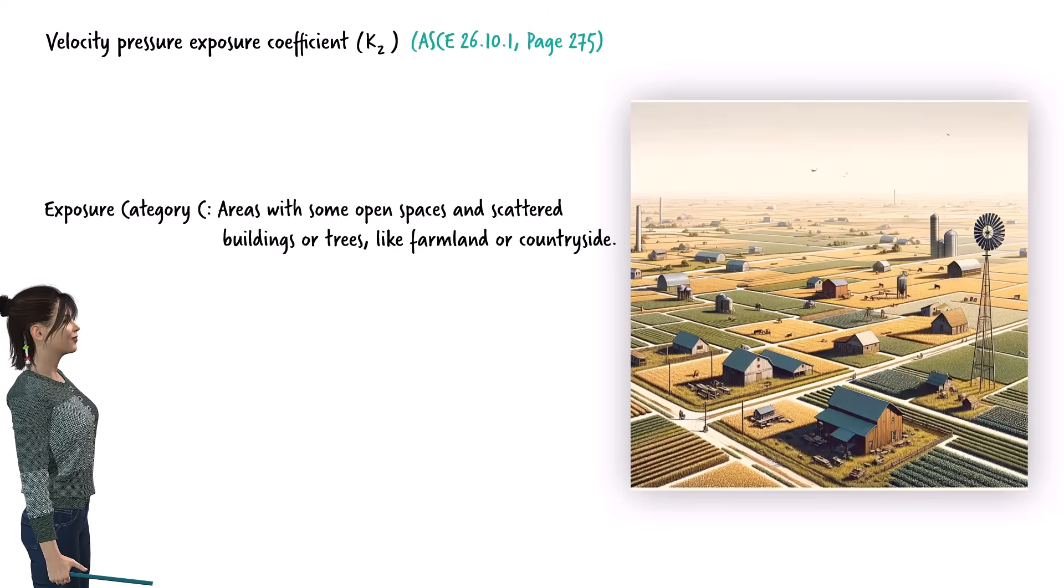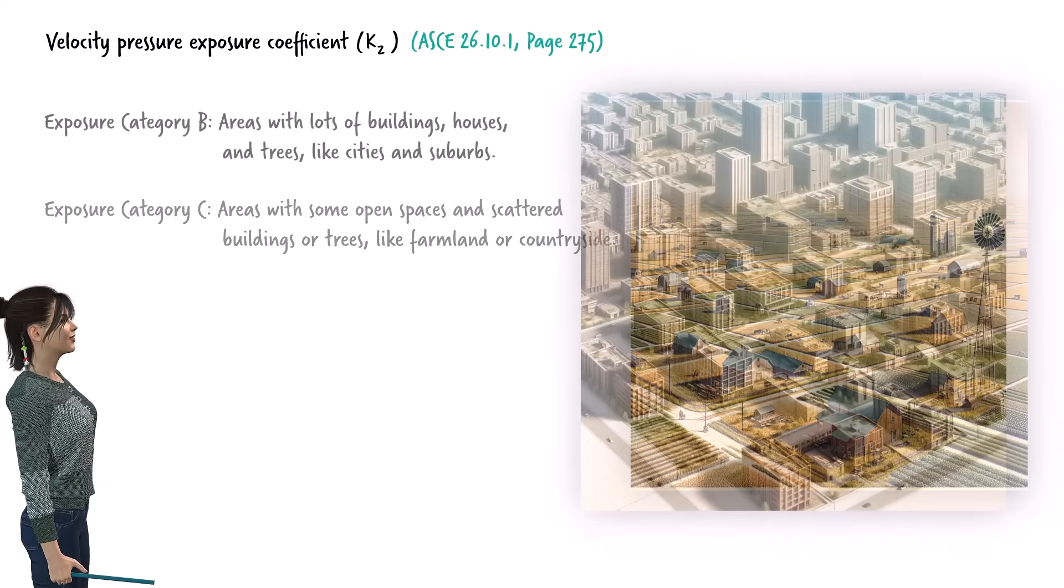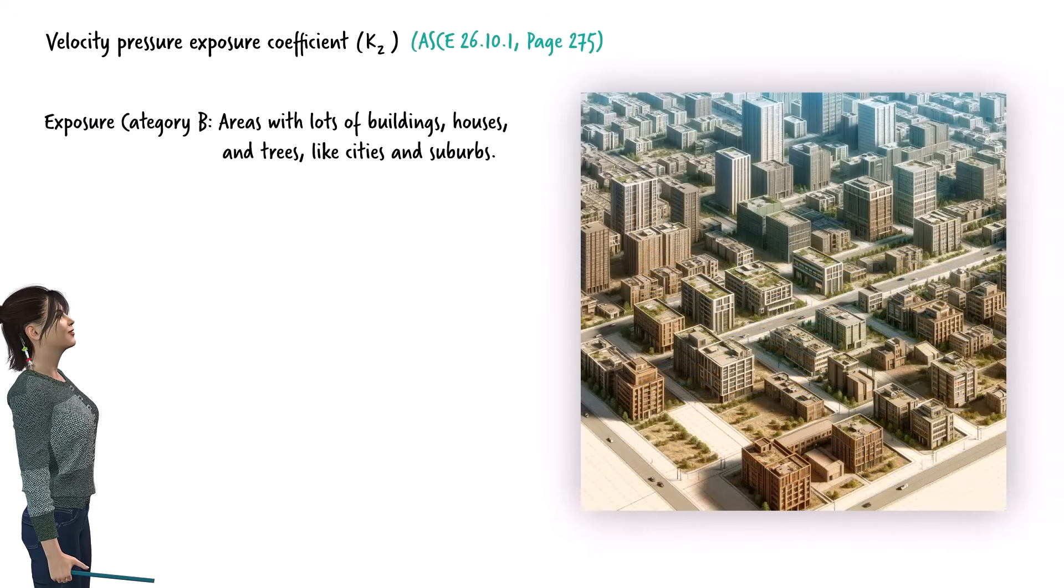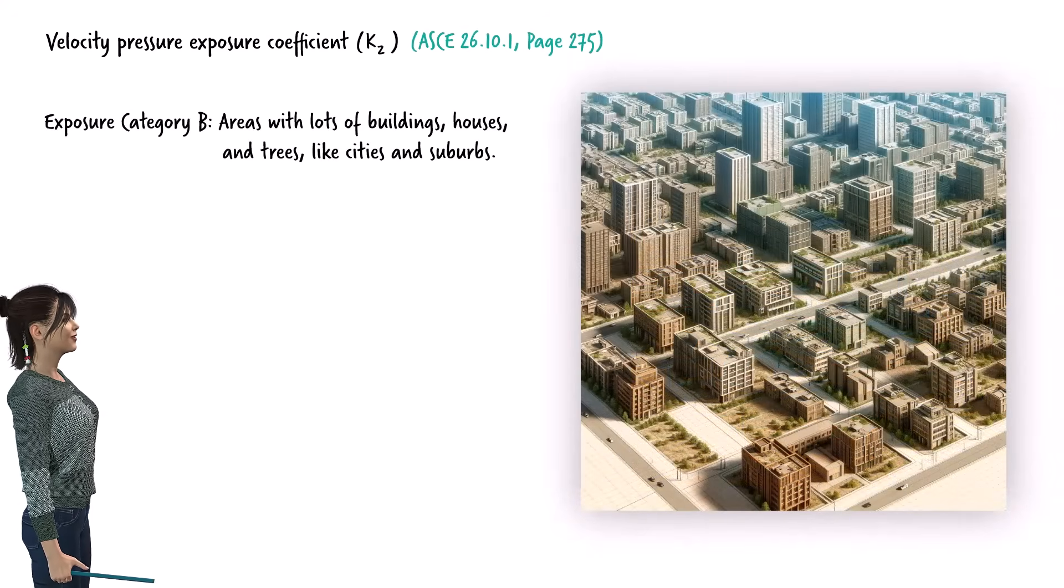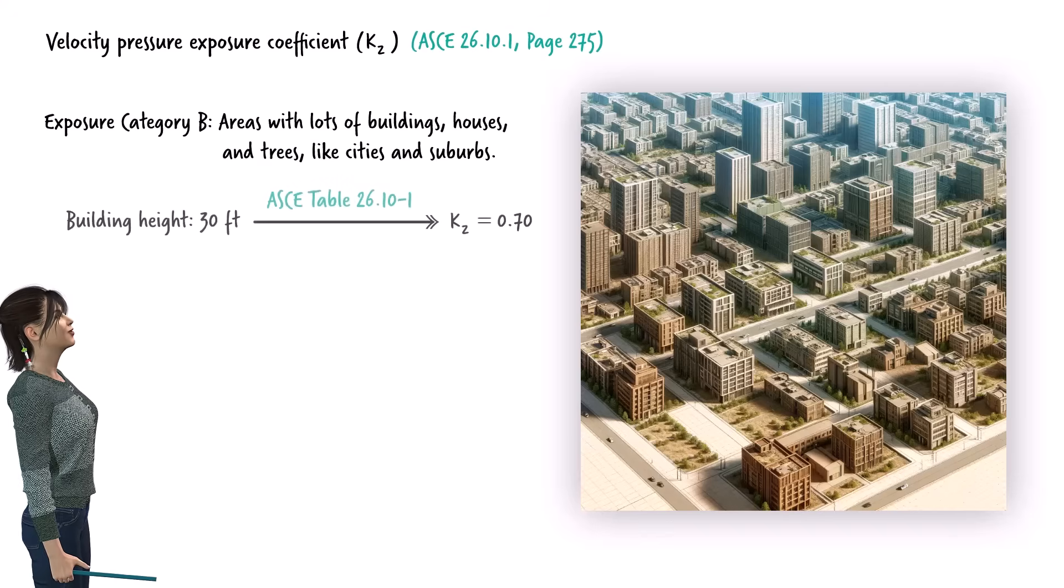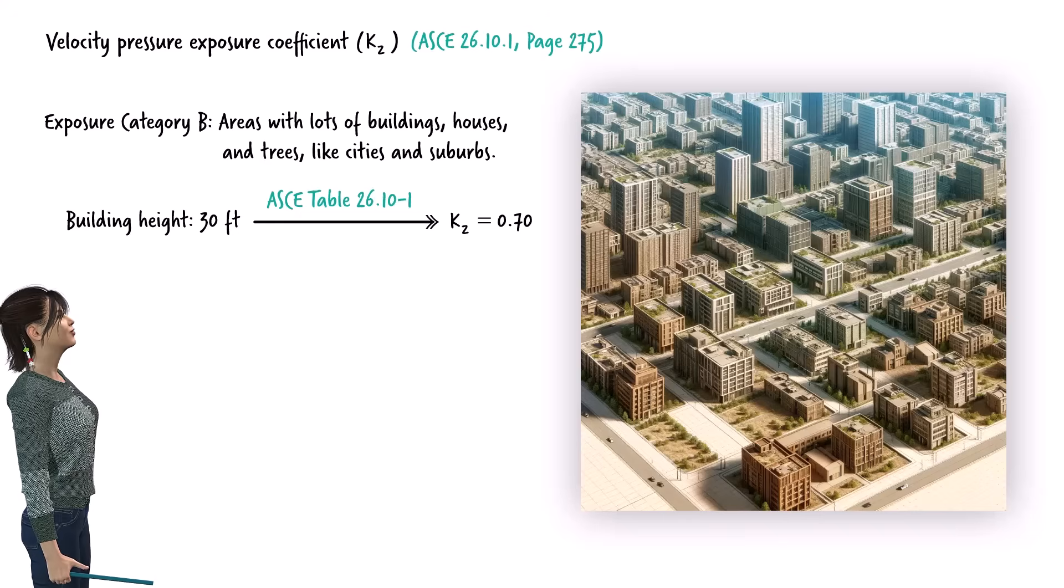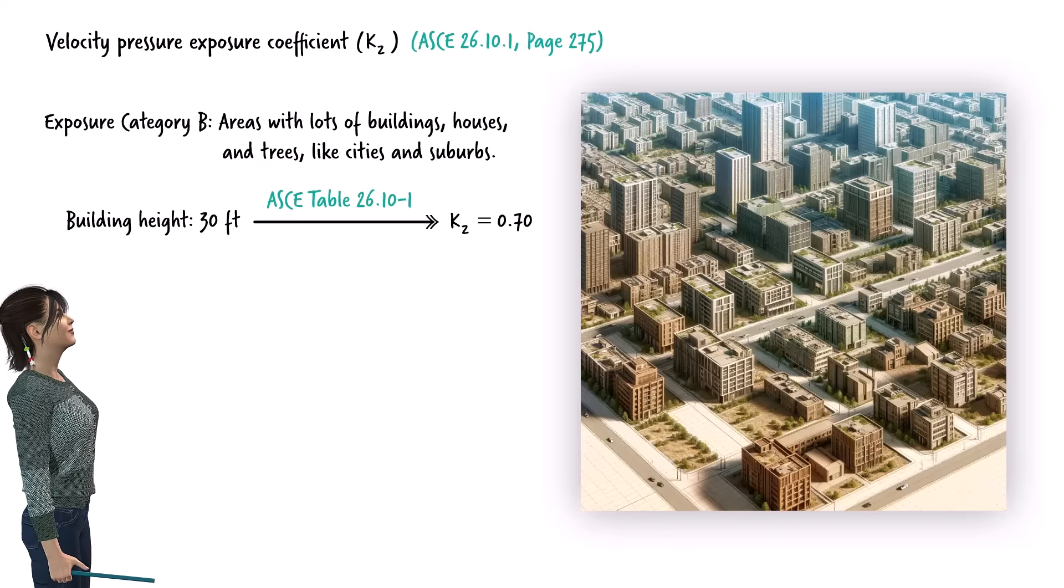In the case of our canopy, we need to choose exposure category B, since the building is located in a suburban area with other buildings and obstacles nearby. Knowing the exposure category, we can find K sub Z from ASCE table 26.10-1. This table shows the velocity exposure coefficient based on height and exposure category. For category B at 30 feet, K sub Z is 0.7.